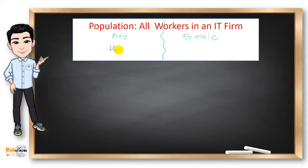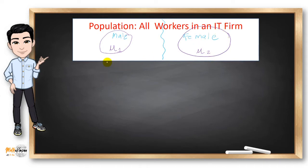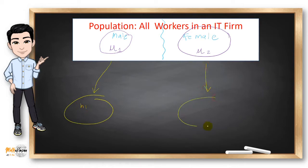Let mu sub 1 be the average salary of male workers in the company and mu sub 2 be the average salary of the female workers. We then get a sample from each group. Let x-bar sub 1 be the average salary of sample 1 and x-bar sub 2 be the average salary of sample 2.